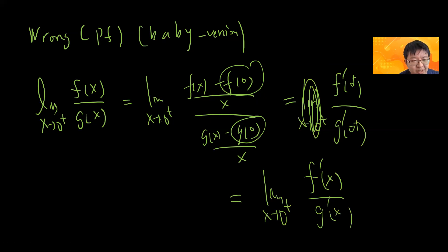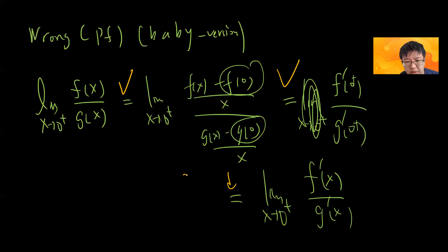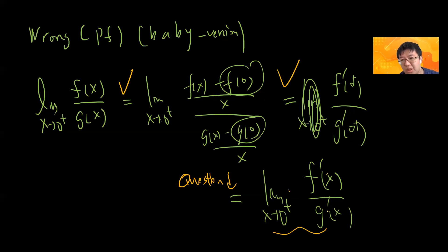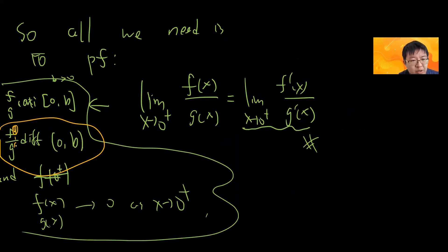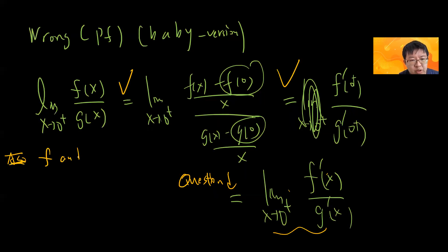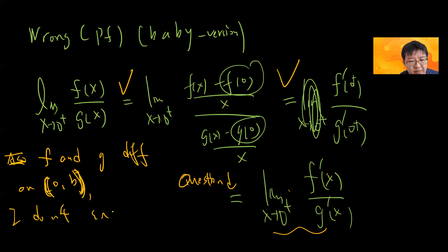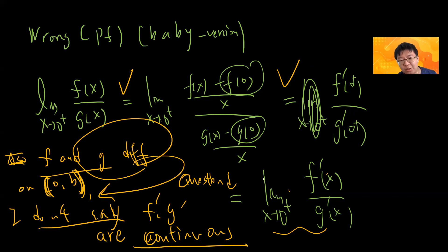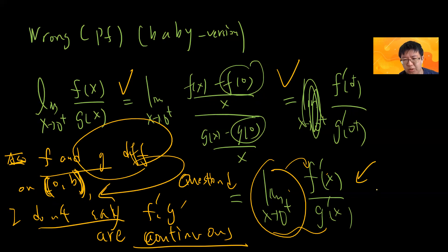But the problem is a hidden assumption. Each individual step is correct — limit exists, so you can do this — but the questionable step is writing f(x)/g(x) = [f(x)−f(0)]/x divided by [g(x)−g(0)]/x. This requires f' and g' to be continuous at zero. I only assumed f and g are differentiable on (0, b), not that f' and g' are continuous. So this proof needs an extra assumption and is not 100% correct.